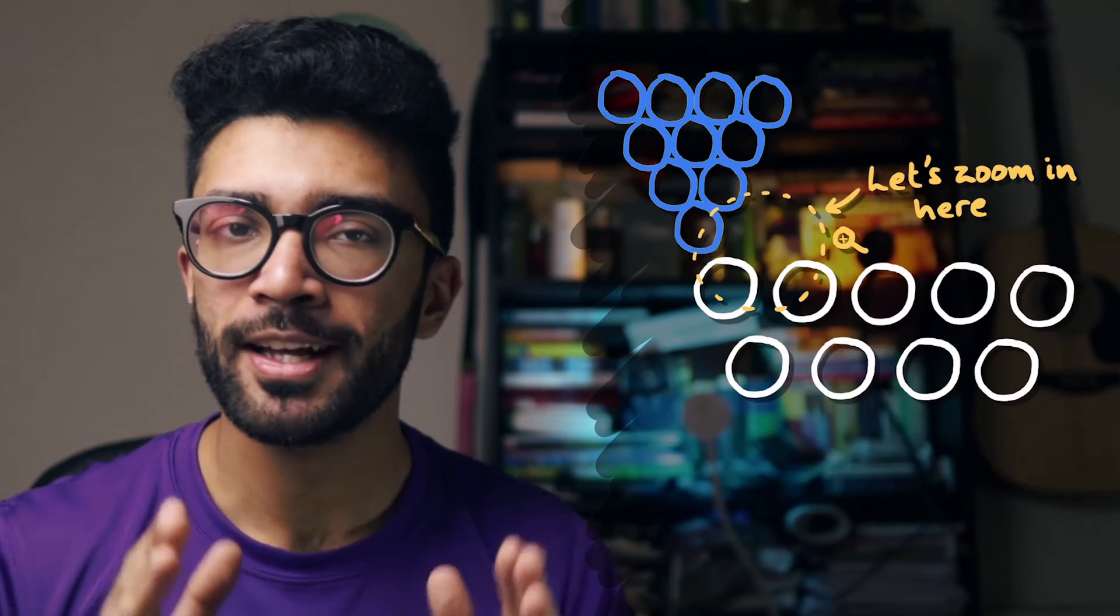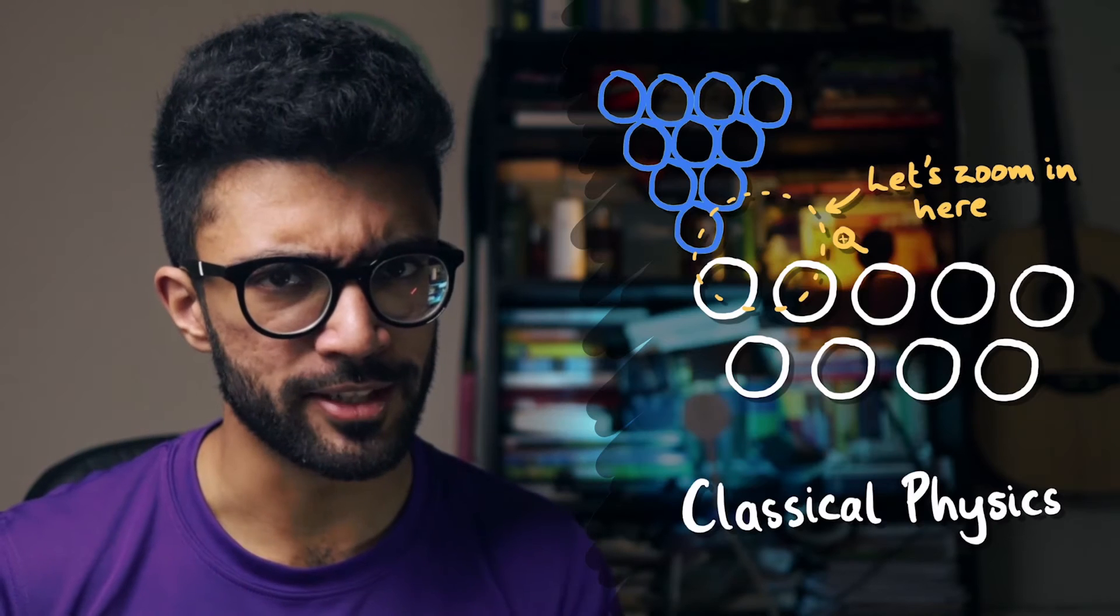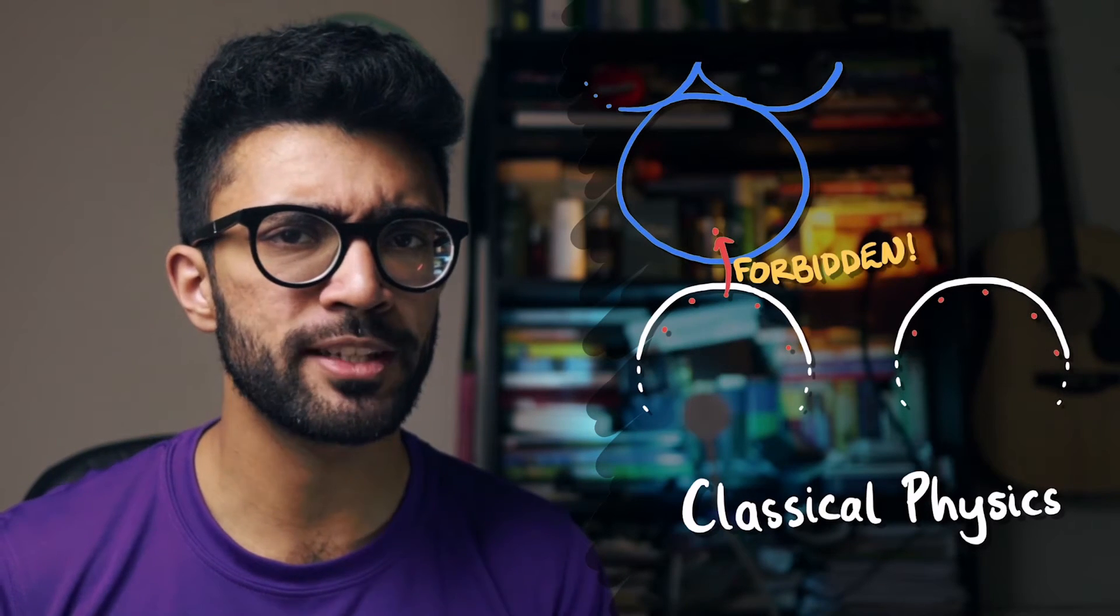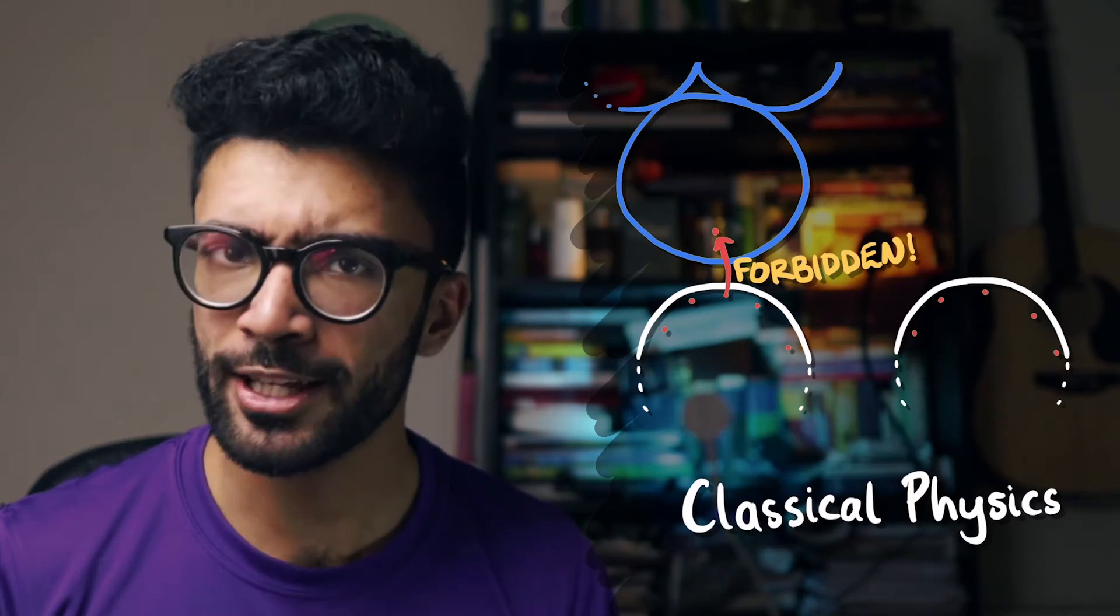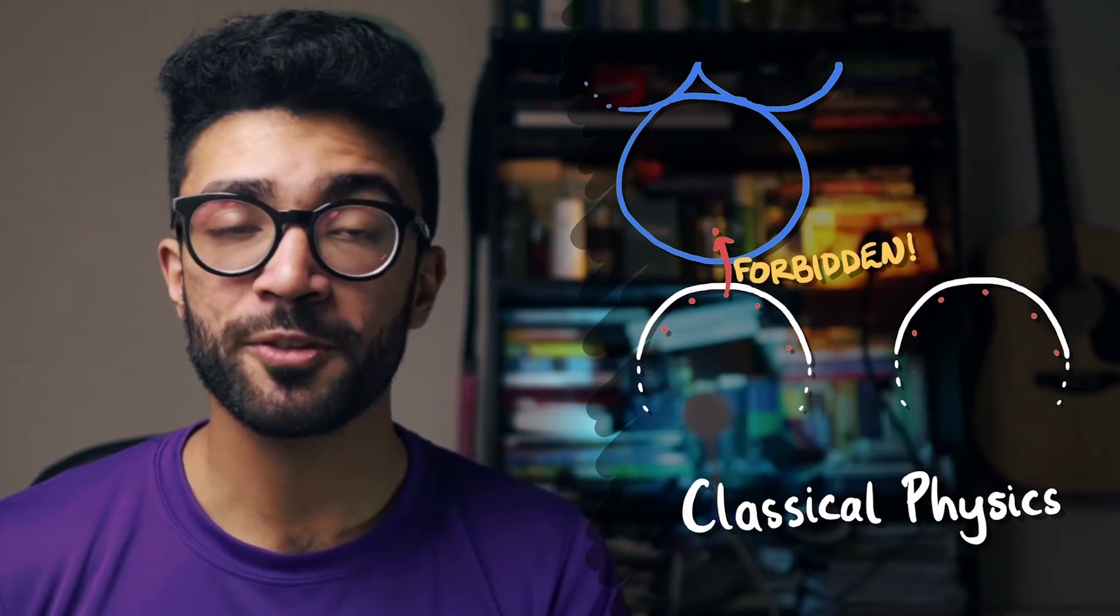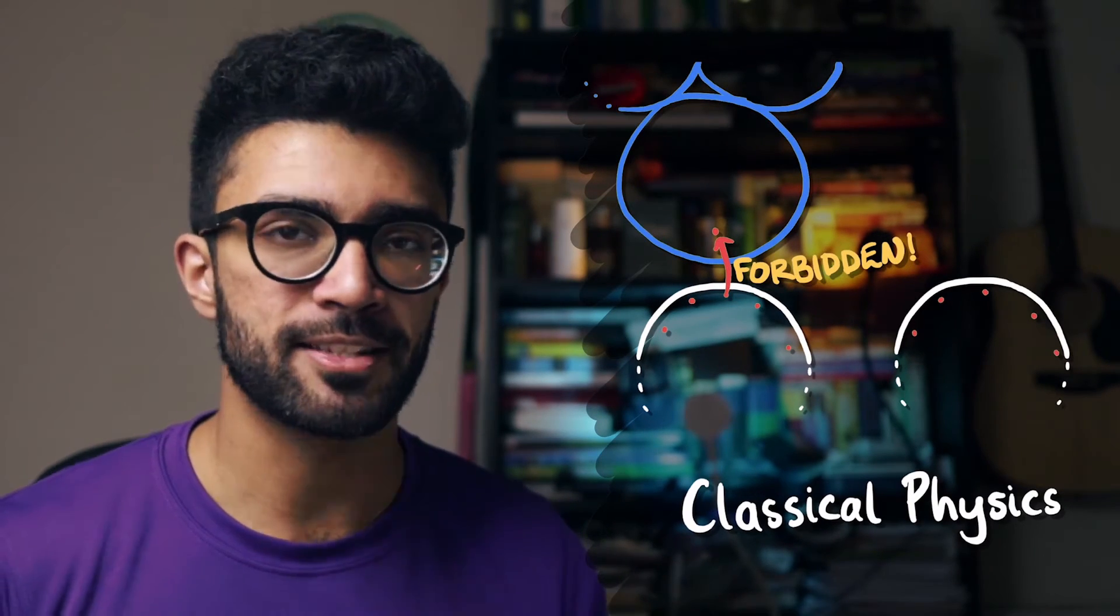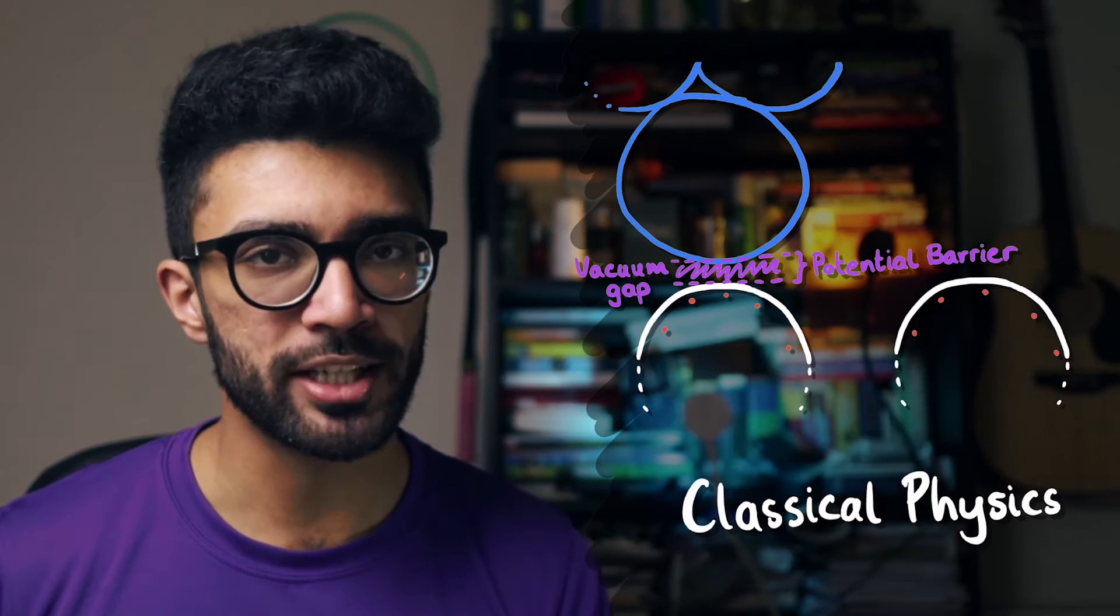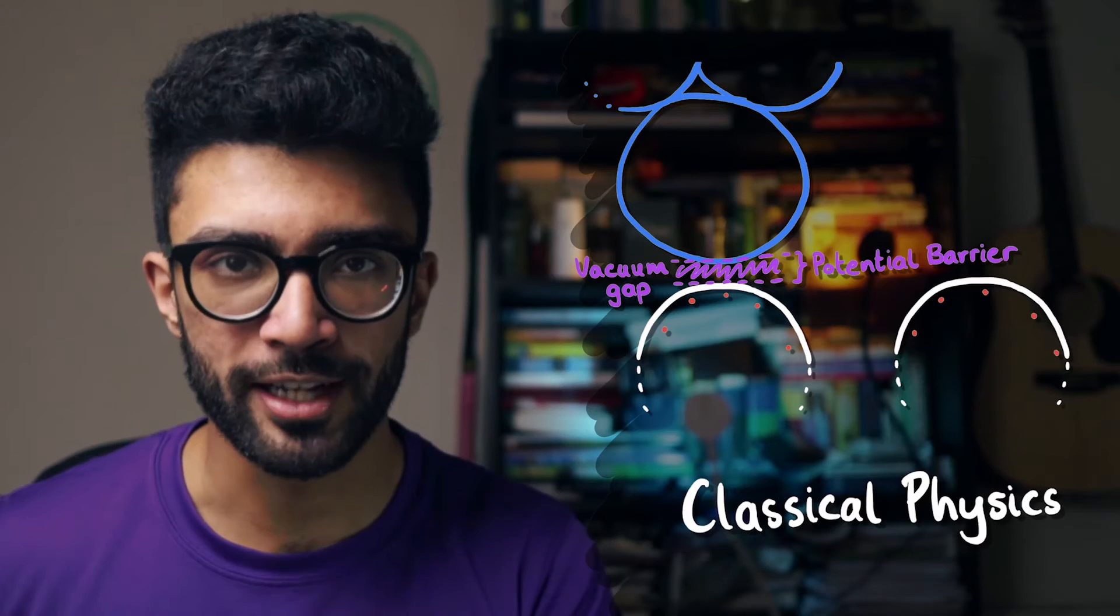Let's start by zooming in closer to the bottom of the metallic tip and the surface of the sample. In the realm of classical physics, the electrons found in the carbon atoms in our graphite surface had absolutely no way to jump across the vacuum gap between the sample surface and the metallic tip. This was forbidden because the vacuum gap acted as a potential barrier. Electrons would need ridiculous amounts of energy to get over the potential energy barrier.